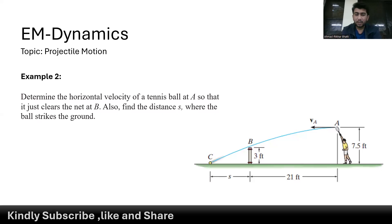In this problem, we have to find the horizontal velocity of the tennis ball at point A so that it just clears the net at point B. And also, we have to find the distance S where the ball strikes the ground, which is basically the distance between points B and C.